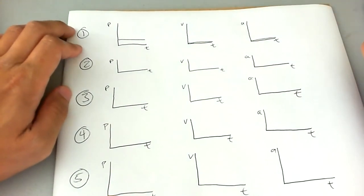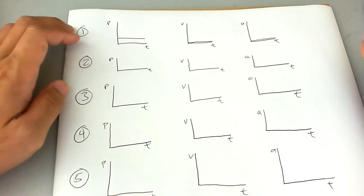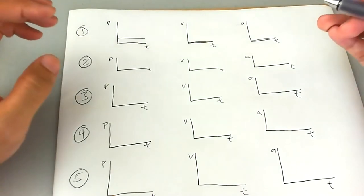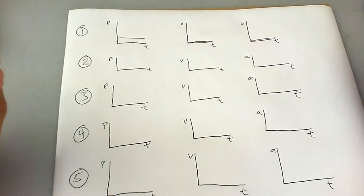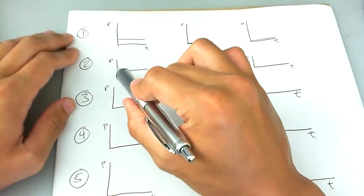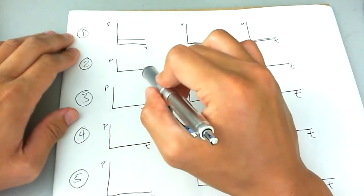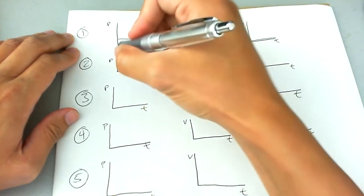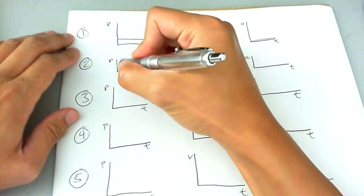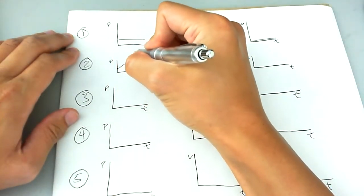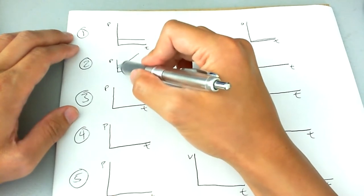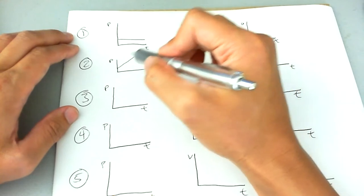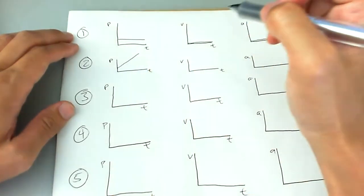For the second problem, we have a hockey puck sliding forward on ultra smooth ice. We'll assume forward means in the positive direction. So the hockey puck will have a constant velocity going in the positive direction. The position of the hockey puck will increase as time goes on. Since it's a constant velocity the whole time, starting from wherever it begins, it's just going to go up at an angle. The angle of that slope is based on how fast it's going — the faster it goes, the higher the angle, since position changes more each second. If it goes slower, the line will be more horizontal.